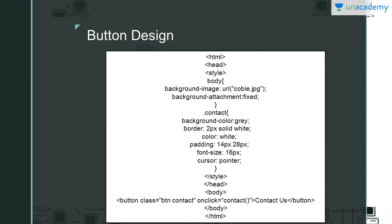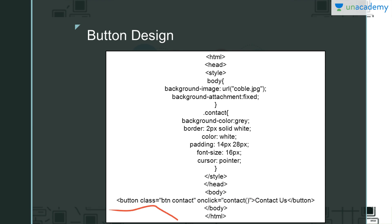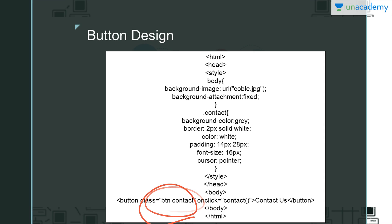First is button design. This is the basic tag structure: opening tags, HTML, head, style. In the body tag you can see I have mentioned the button here. The opening tag is 'button' with class 'contact'. The class basically defines the ID of the button. Using this class you can design your button. The class name is 'contact' and BTN is the object name — so 'contact' works as the ID of the button.